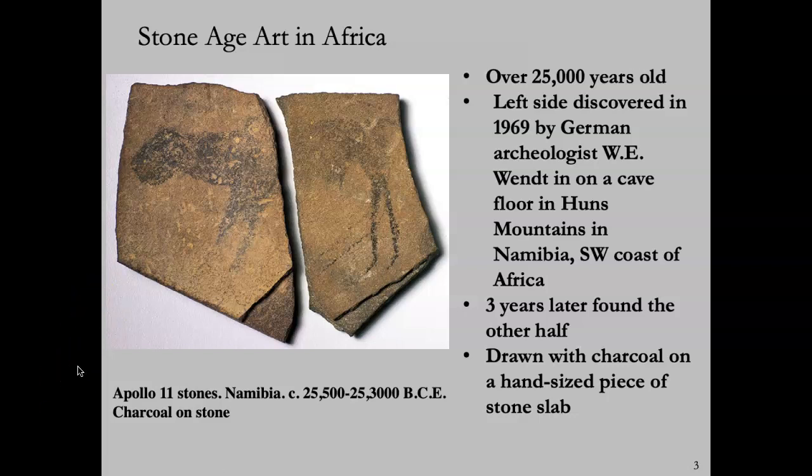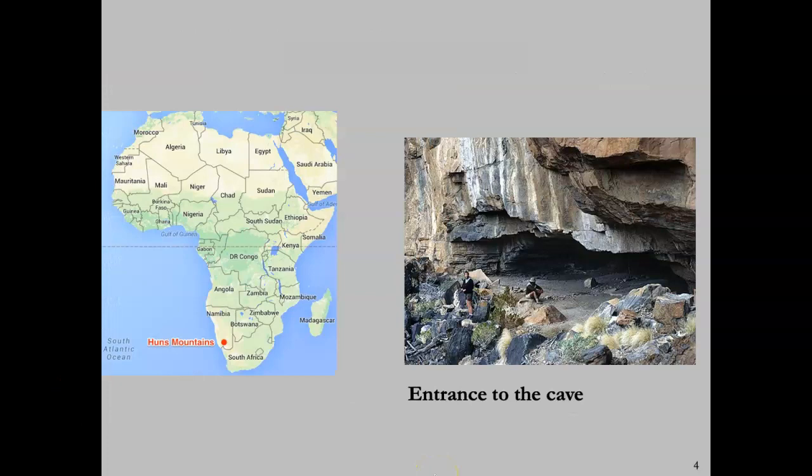Wendt called these the Apollo 11 stones because when he was in the midst of his excavations, he heard on his shortwave radio the news of NASA's successful space mission to the moon. So these rocks, which represent the first traces of human creativity in the ancient era, bear the title of that promise of future space exploration — an interesting combination of ancient art with the promise of the future. The rock shelter where the Apollo 11 stones were found is in the Han Mountains of Namibia on the southwest coast of Africa, now part of the Richtersveld Transfrontier Park.